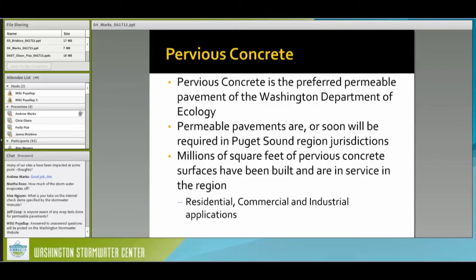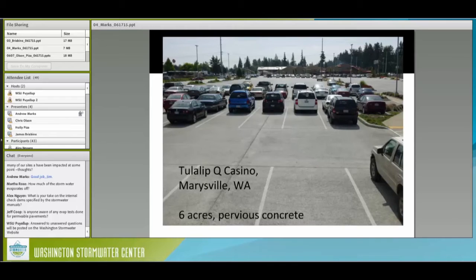Pervious concrete is a preferred permeable pavement of the Department of Ecology, and permeable pavements will soon be required in Puget Sound region jurisdictions. Mark Palmer has stated there will be no more conventional pavements on new construction or reconstruction in Puyallup — it will be porous asphalt, pervious concrete, or another pervious option. Millions of square feet of pervious concrete surfaces have been built and are in service in the region.